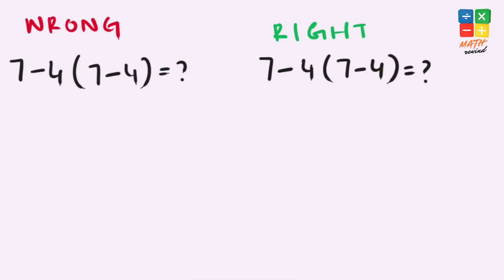So 7 minus 4 gives us 3 and this 7 minus 4 also gives us 3. So 3 times 3 gives us 9.